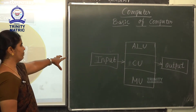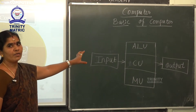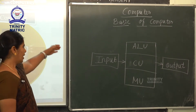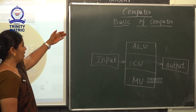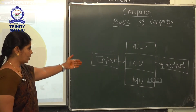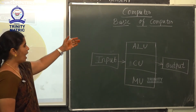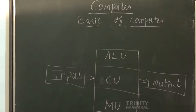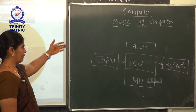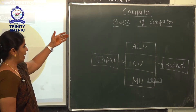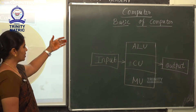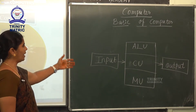This is the basic of computer and this is the model of computer. How do computers work? Input, processing, output. The CPU is divided into three parts: ALU, CU and MU.